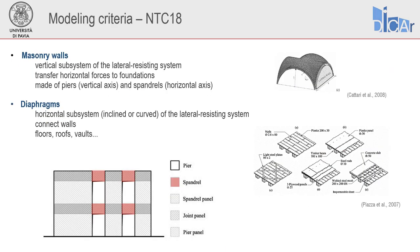In masonry buildings, walls are the main structural elements and they are vertical subsystems made of piers, which are the portions with vertical axis, and spandrels, which are the regions with horizontal axis. Walls carry loads and also transfer horizontal actions to the foundation. These vertical subsystems are connected by floors that also redistribute horizontal actions between walls.